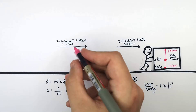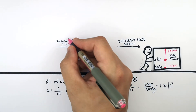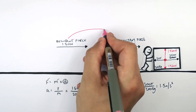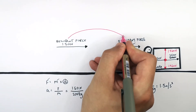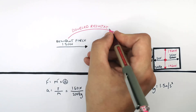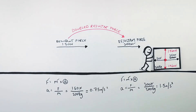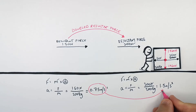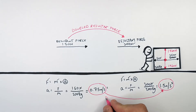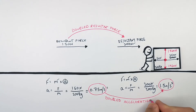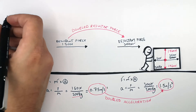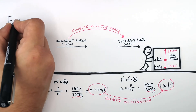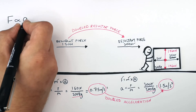So the initial resultant force acting on the 200 kilogram box was 150 newtons. We doubled that resultant force acting on the same box to 300 newtons. And as you can see, when we doubled the resultant force acting on the box, the acceleration doubled as well — from 0.75 meters per second squared to 1.5 meters per second squared. So the resultant force acting on an object is proportional to the acceleration acting on that object.